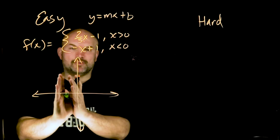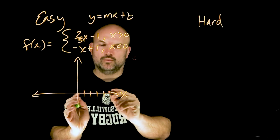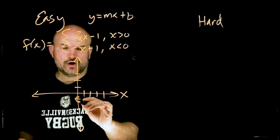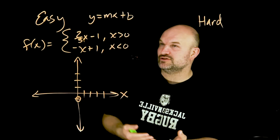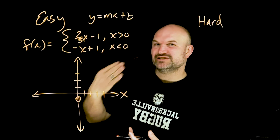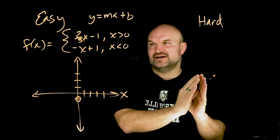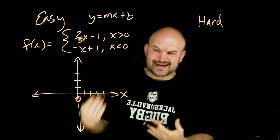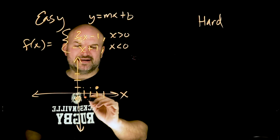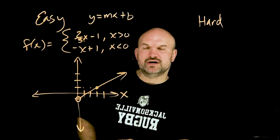I'm only going to graph to the positive side of the x-axis. Let's find our y-intercept, which is negative one. I'll start with an open circle there. Since the restriction is x greater than zero — not greater than or equal to — I leave it open. Then I follow the slope to the right. The slope is two over three, so rise over run: up two, over three. That's my next point, and the graph continues up and to the right.